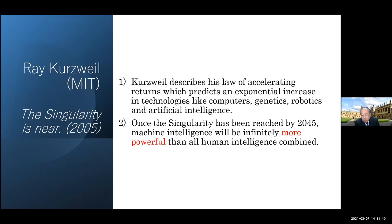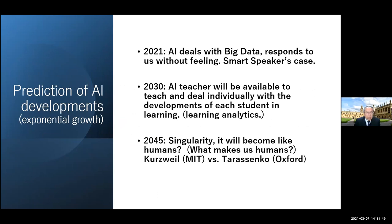Once the singularity has been reached by 2045, machine intelligence will be infinitely more powerful than all human intelligence combined. His prediction for 2021 is that AI deals with big data and responds to us without feeling — AI has a different kind of feeling. If you use a smart speaker, it's just artificial voice and feeling, but we can carry out some very complicated discourse. By 2030, an AI teacher will be available to teach and deal individually with each student's development, like learning analytics. And then by 2045, the singularity may take place, and it will be like humans, really. But here we have to think about what makes us human.